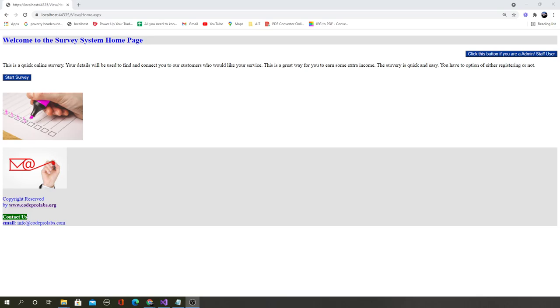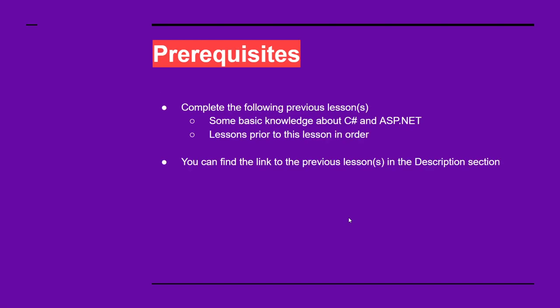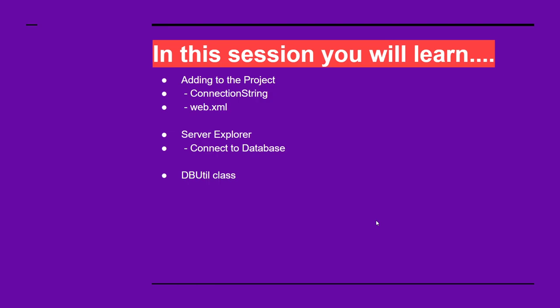Welcome to the ASP.NET complete project survey system, Part 5: Database — Configuring the Project. This is a continuation of a complete project, so make sure to have a look at the previous sessions. This session covers adding a connection string to the project to connect to the database, configuring web.config for database access, using Visual Studio Server Explorer to view data, and creating a DBUtils class to access the connection string.